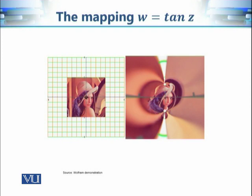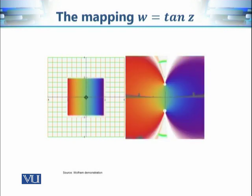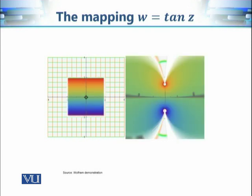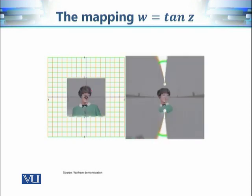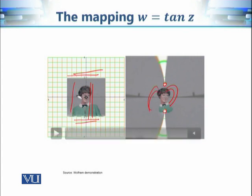Now let's discuss the image of the Lena picture under the mapping tan(z). The lines parallel to the real axis are mapped onto tiny circles, and the lines parallel to the imaginary axis are mapped onto circular arcs — giving a two-circular-arc pattern. Similarly, for a child image, each portion is mapped onto tiny circles or circular arcs correspondingly.